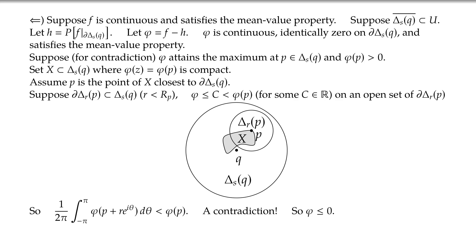Now you could rerun this argument — either with H − F, or by finding the minimum and assuming it's negative — and you also get that φ is greater than or equal to zero. So φ equals zero, meaning F equals H on the entire disk. Therefore F is harmonic, and we're done. We've finished the proof.